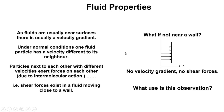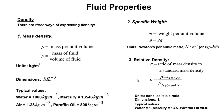As fluids are usually near surfaces, there is usually a velocity gradient. When we get this velocity gradient, we are also able to define and calculate shear stresses and shear forces. Shear forces exist in a fluid moving close to a wall. Away from the wall, the velocity is the same — indicated by equal-length lines — meaning no velocity gradient, therefore no shearing stresses. Shearing stresses come as a result of du/dy, and we'll come back to this when we define Newton's law of viscosity.